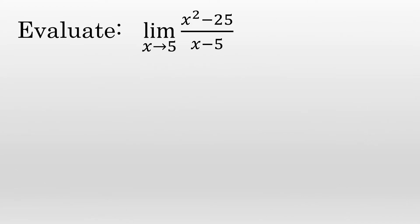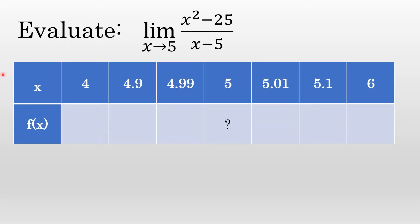When evaluating a limit with a table of values, you'll begin by setting up a table with two rows. The top row will be values for x, and these values will get closer and closer to 5 from below and closer and closer to 5 from above. The bottom row will be labeled f of x — the values you get after substituting the x values. We've already evaluated f of 4 to be 9 and f of 6 to be 11, which implies the limit as x approaches 5 is likely between 9 and 11.